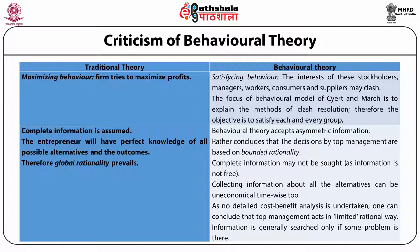In traditional theory, complete information is assumed — the entrepreneur will have perfect knowledge of all possible alternatives and the outcomes, so global rationality prevails. But in behavioral theory, asymmetric information is accepted and the decisions by top management are based on bounded rationality. Complete information may not be sought, as collecting information about all alternatives can be uneconomical time-wise too. As no detailed cost-benefit analysis is undertaken, one can conclude that top management acts in a limited rational way.